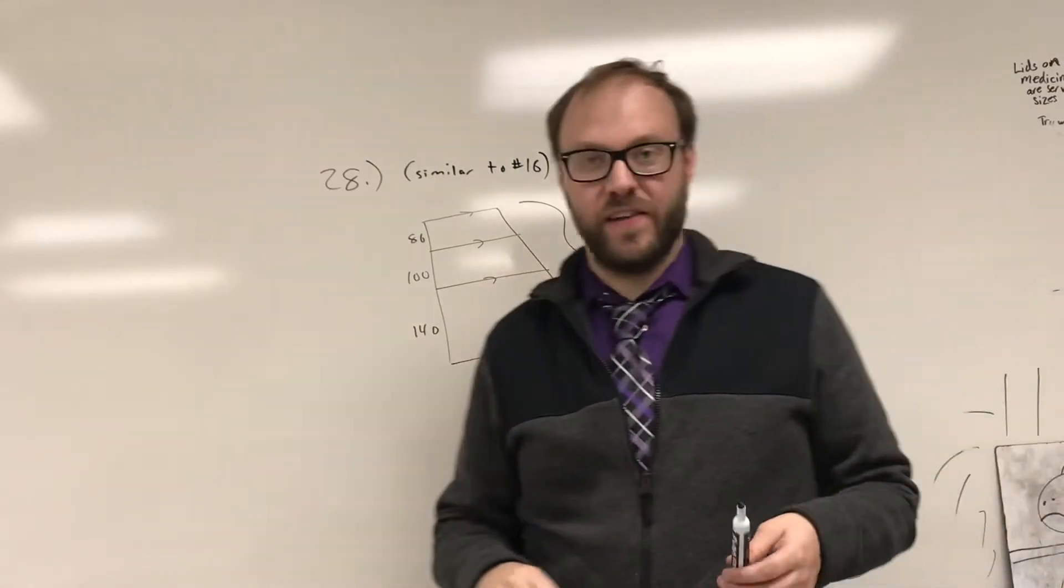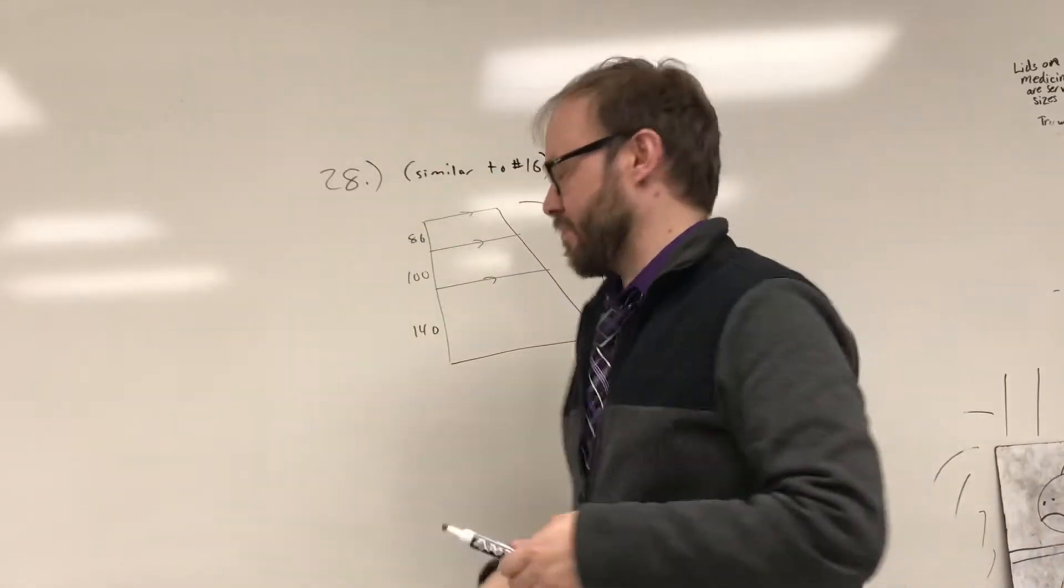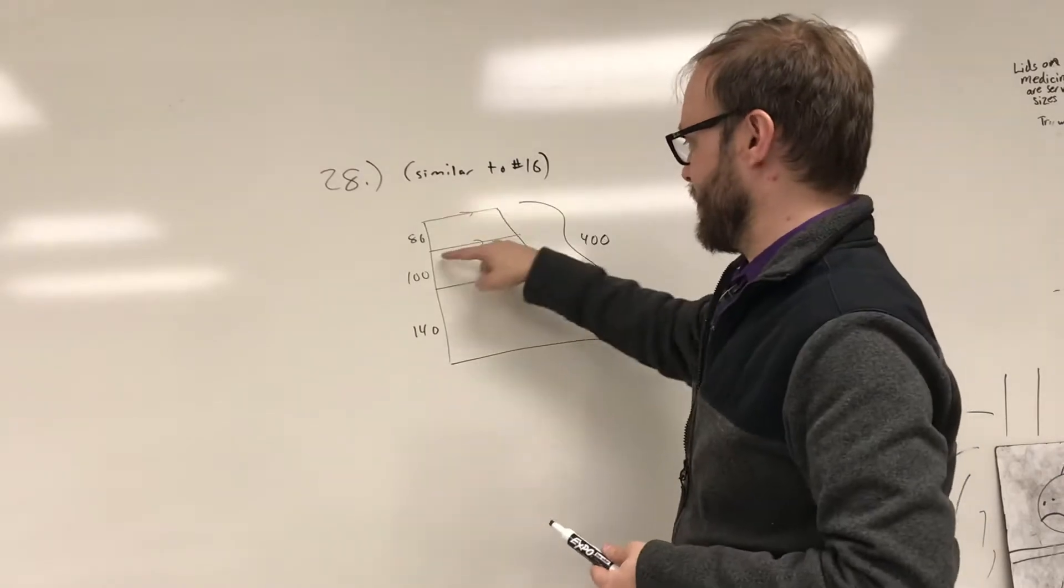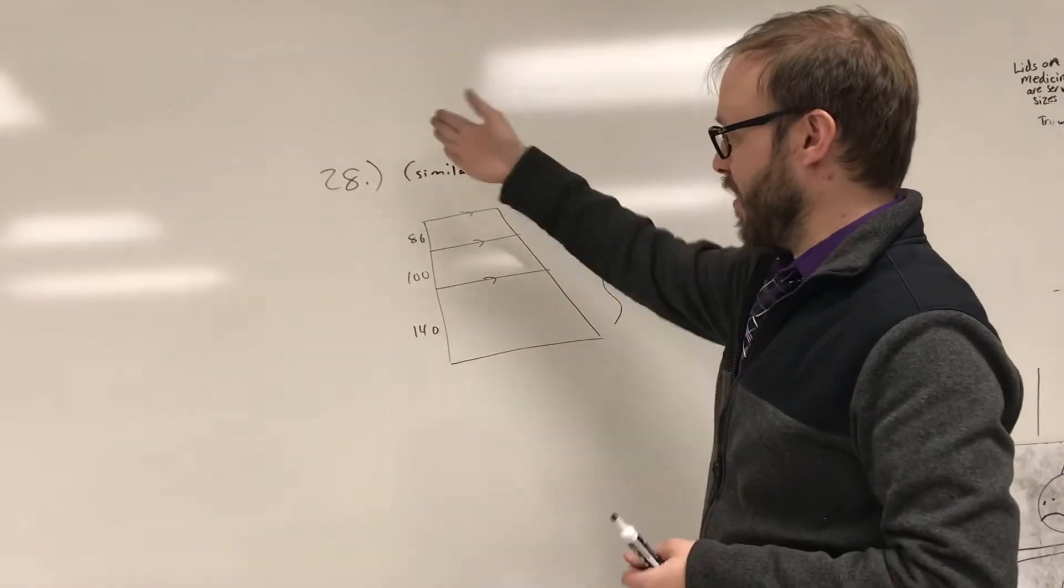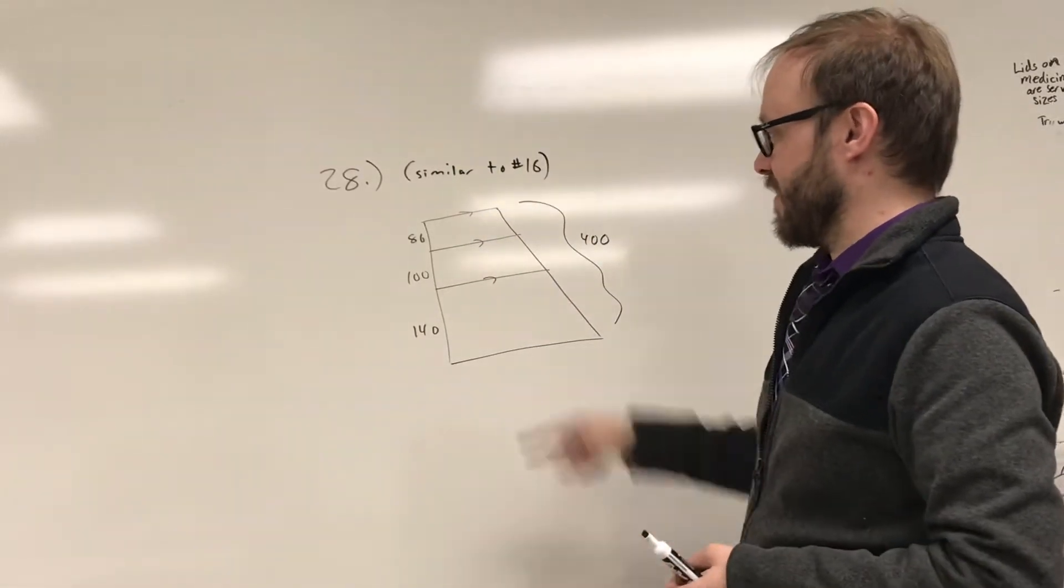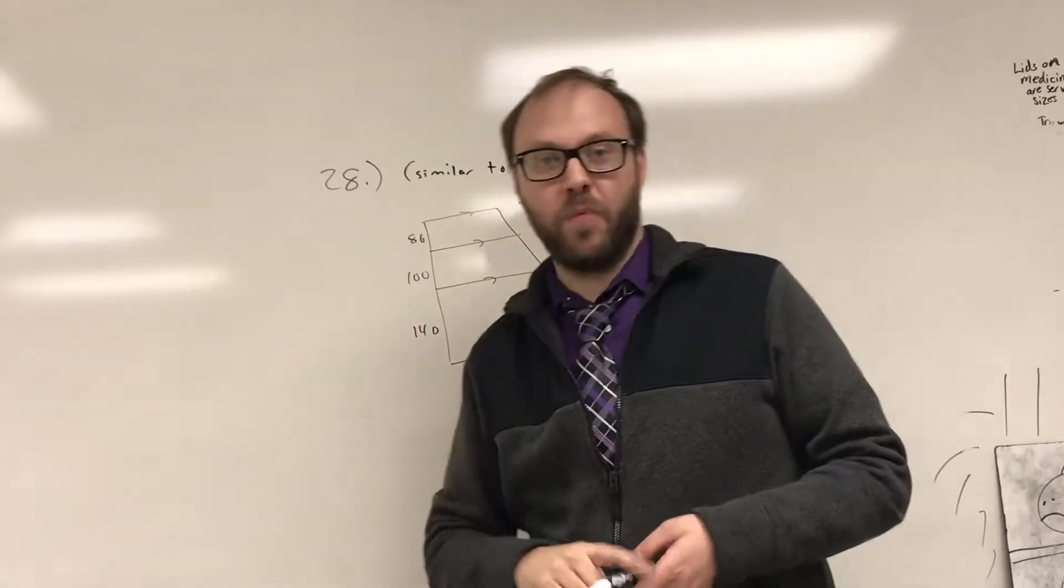I turned the diagram sideways because, again, I'm very visual. I need to see things upright. This is a parallel line relationship. We know that when you have parallel lines cut by transversals, the transversals are cut in the same proportion on the right and the left.